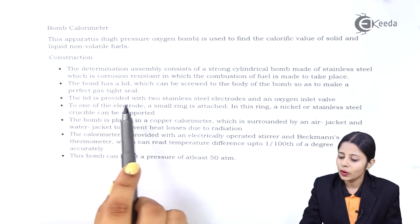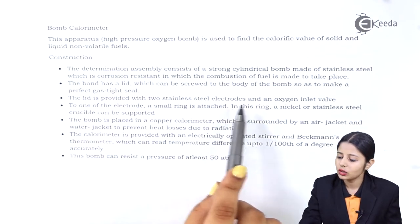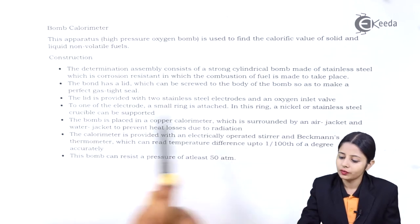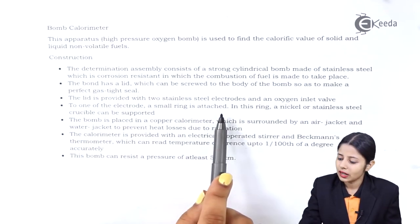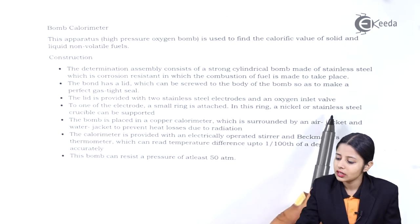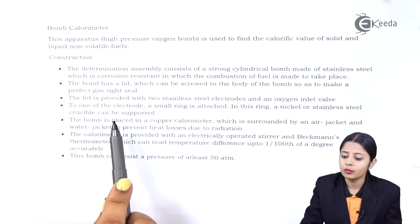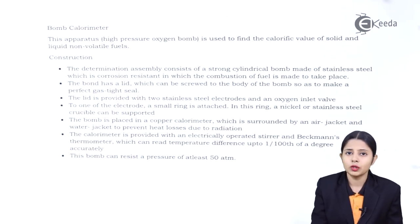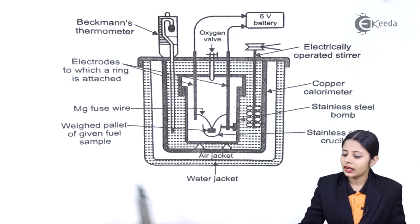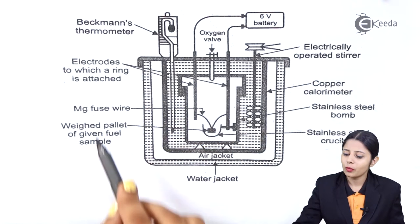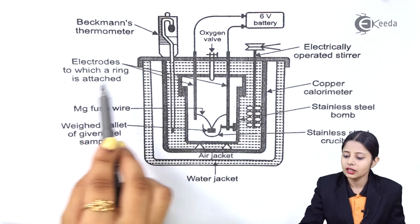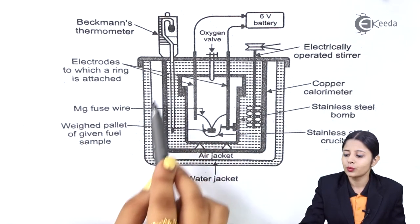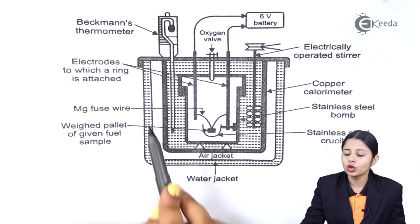The lid is provided with two stainless steel electrodes and an oxygen inlet valve. To one of the electrodes, a small ring is attached, and in this ring a nickel or stainless steel crucible can be supported. Now let me show the diagram of the bomb calorimeter. This electrode to which a ring is attached can support a small crucible.